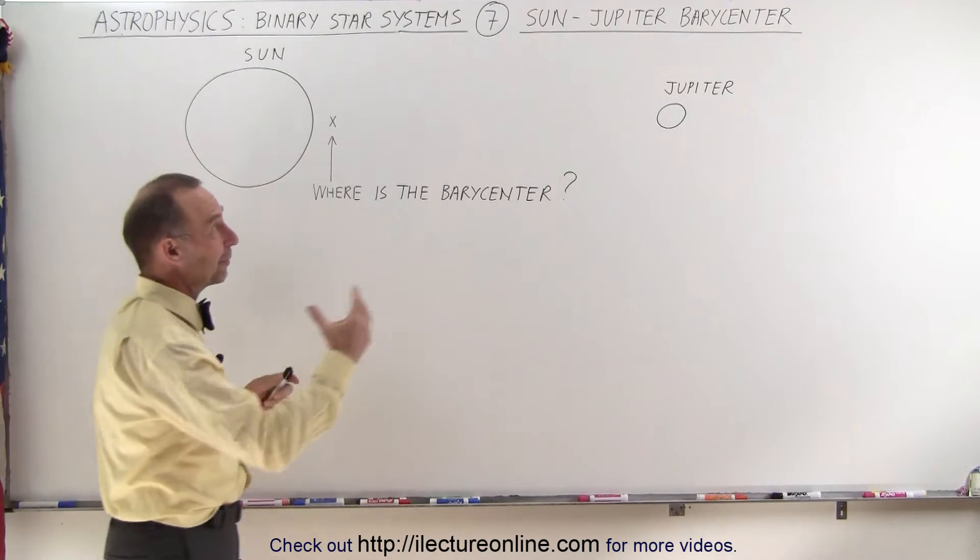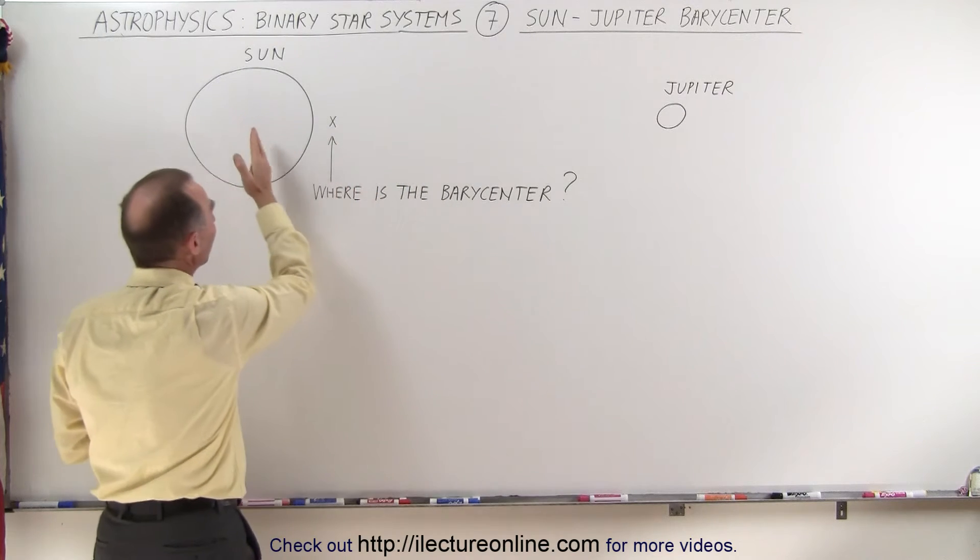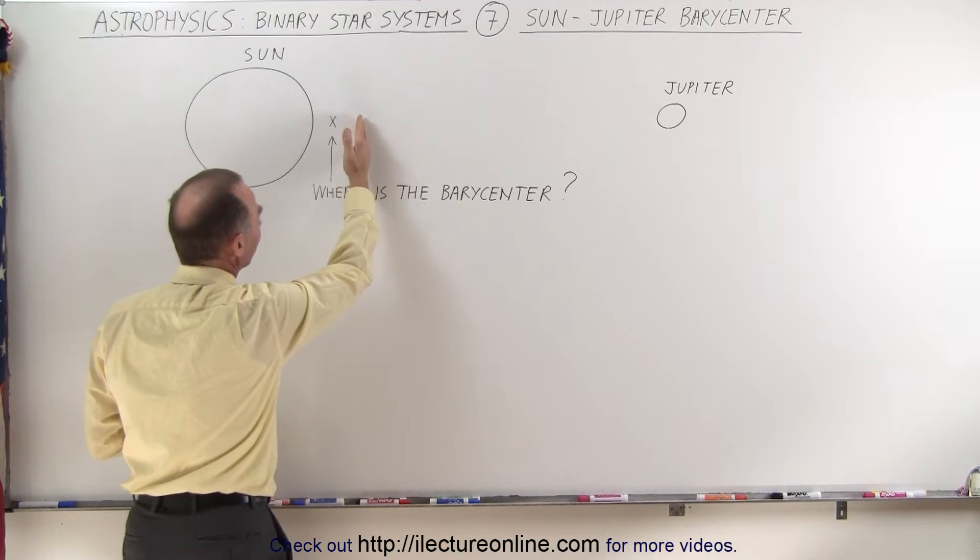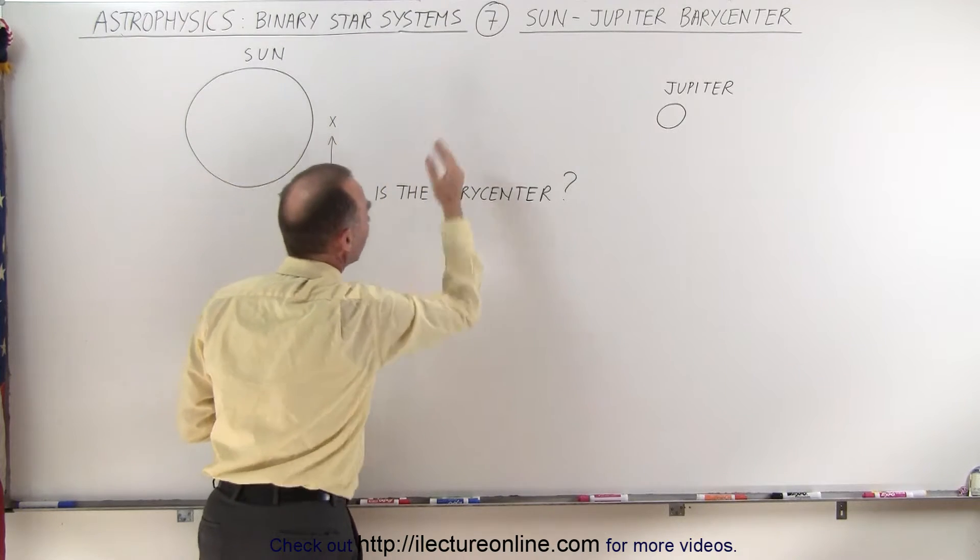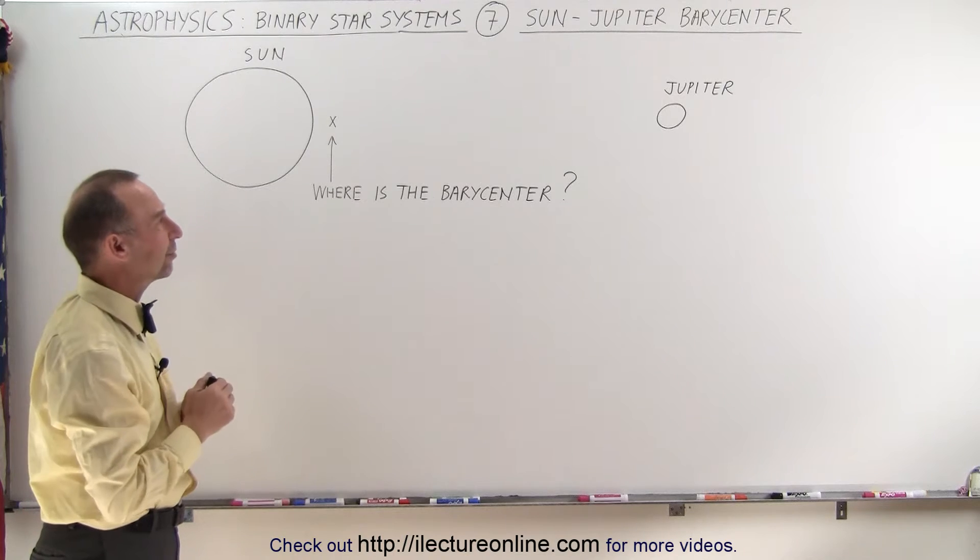If there's a very big planet that is reasonably close to a star, the barycenter between the star and the planet actually is outside the star. The farther outside the star it is, the easier it is to pick up the motion of that star going around the barycenter.